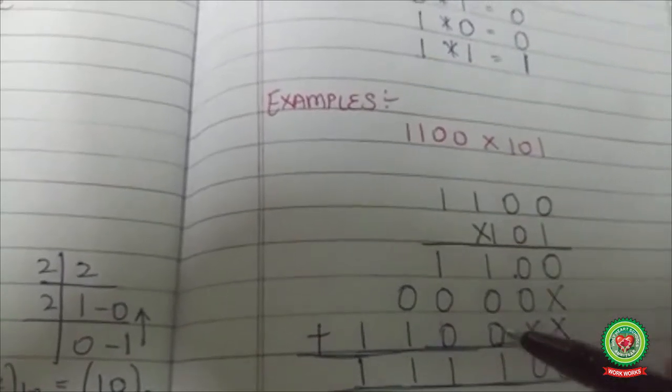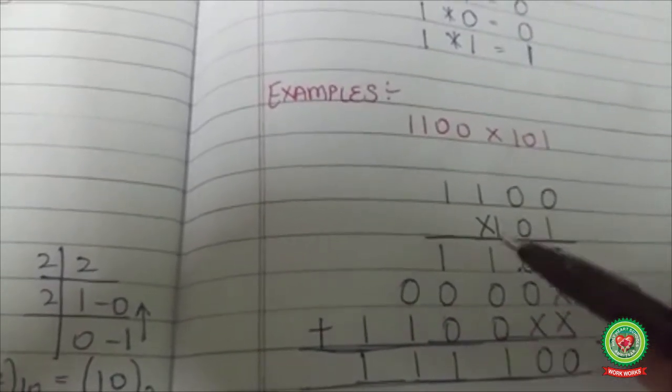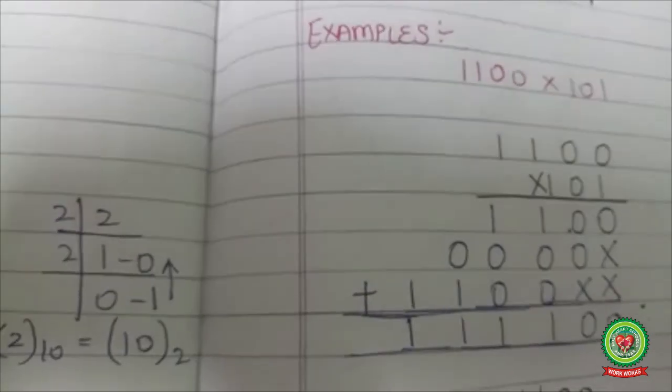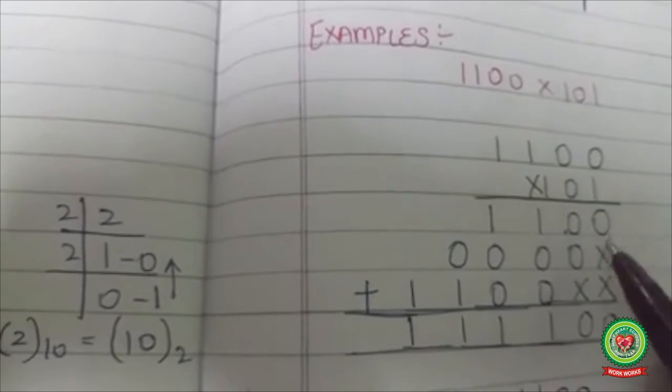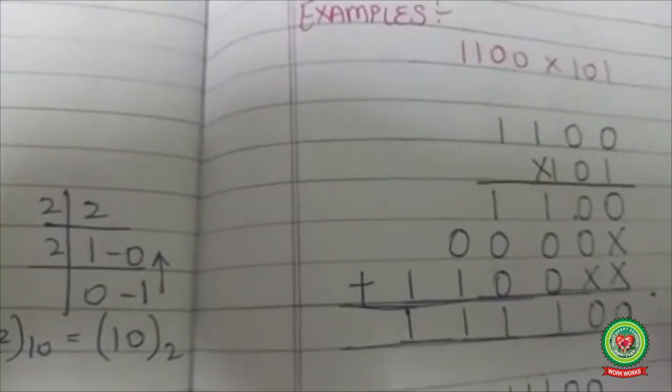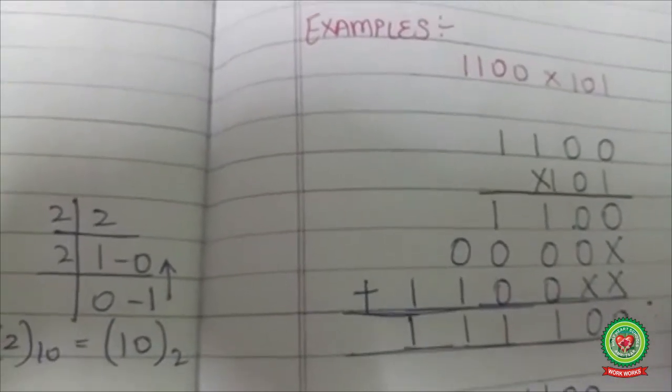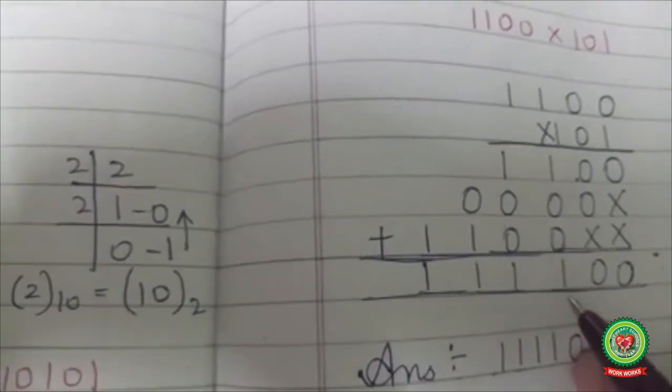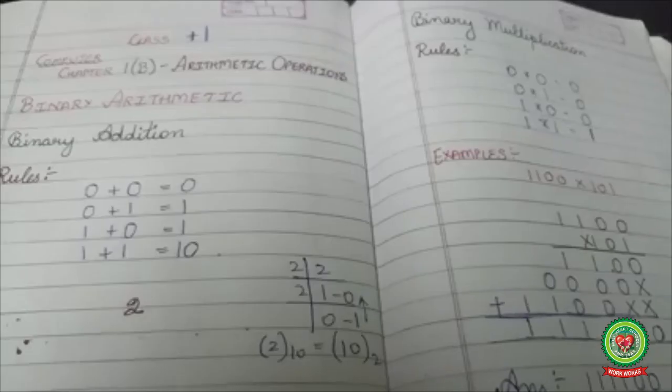Now at the end, we are going to add these numbers by using the same rules of binary addition. So the answer is 11111000.